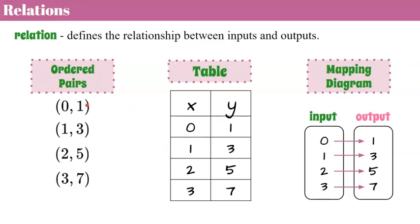And here we have our last one: 3 maps to 7, ordered pair (3, 7). So three ways to show a relationship: a list of ordered pairs, a table, and now we're introducing a mapping diagram.